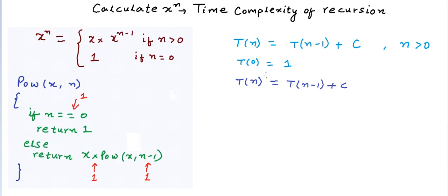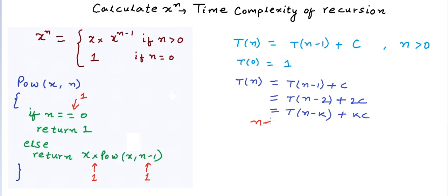Now let's solve this recurrence relation and express it in terms of the base condition T(0). T(n-1) can be written as T(n-2) + c, so this becomes T(n-2) + 2c. We can go on: T(n-3) + 3c, and in generic form, T(n-k) + k·c. To express this in terms of T(0), we set n minus k equal to zero, which implies k equals n.